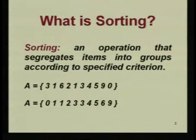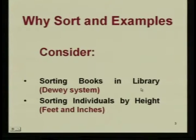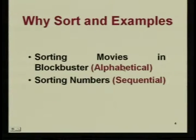What is sorting? Sorting is an operation that segregates items into groups according to a specific criterion. Depending on the type of elements, you can have different types of criterion. For example, if you have a numerical example, you can sort in ascending or descending order. If it was alphabets, then you have lexicographic order. We have already seen in the case of binary trees what lexicographic order is. Examples include sorting books in a library by catalog number, sorting individuals by height, and sorting movies in alphabetical order.